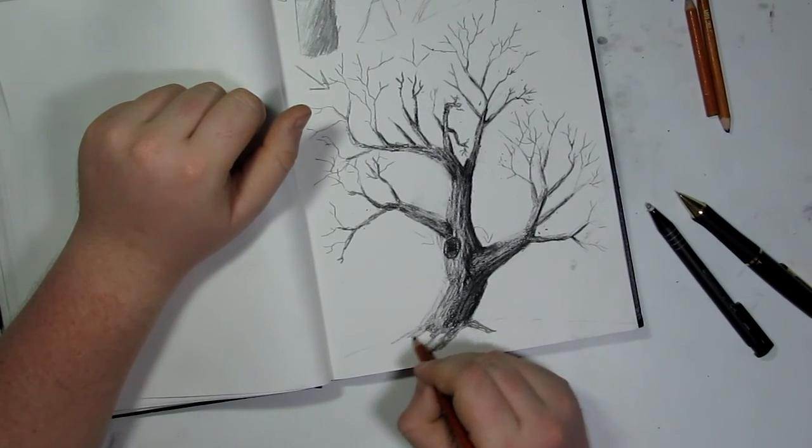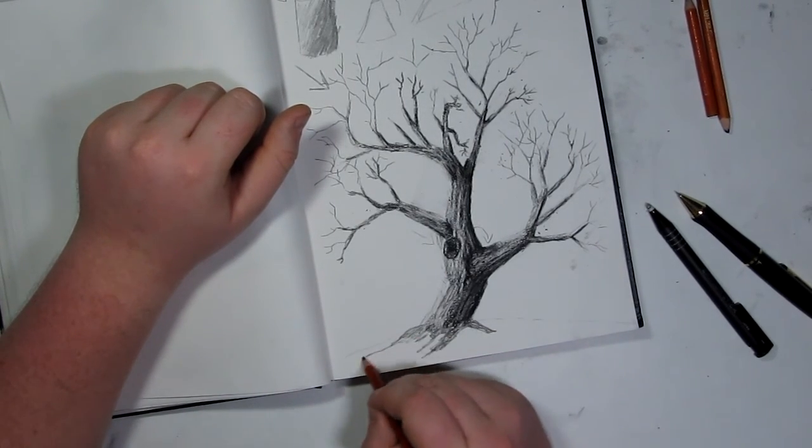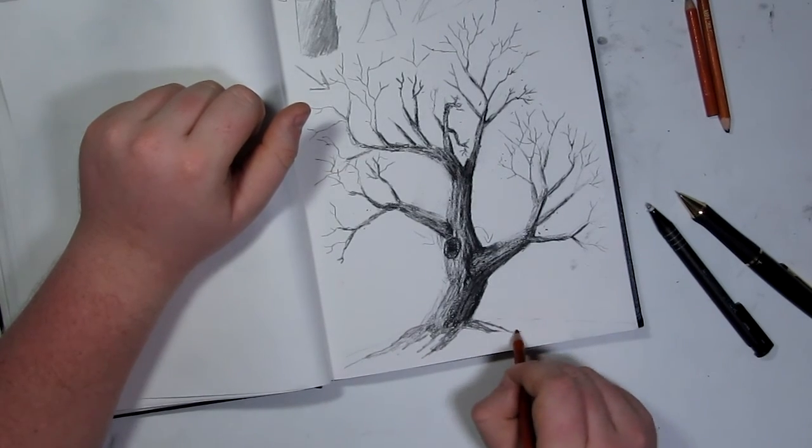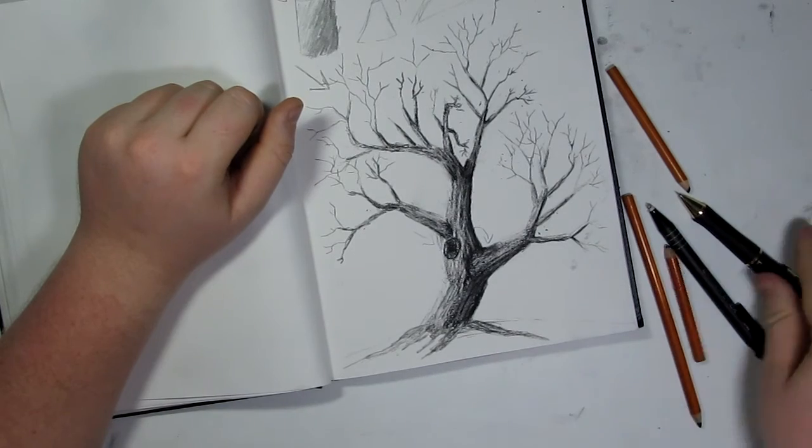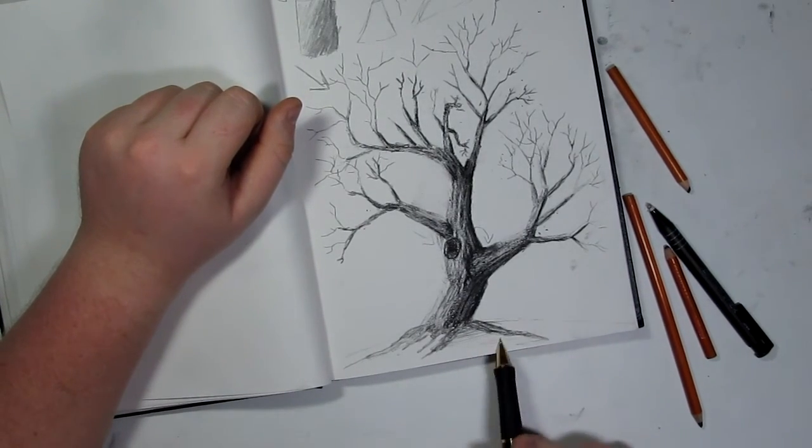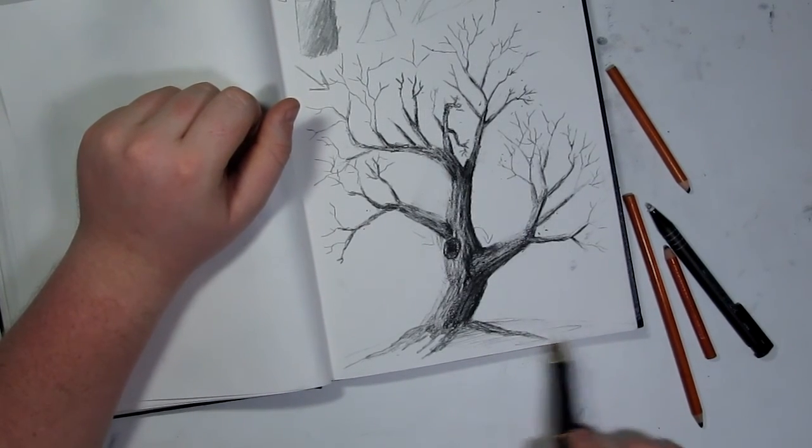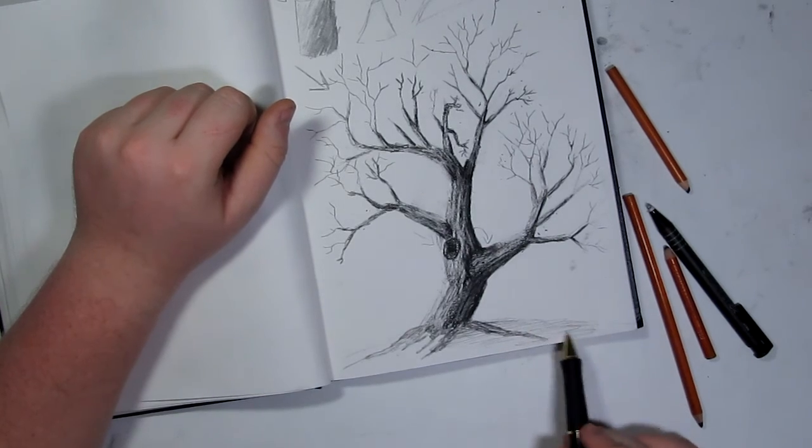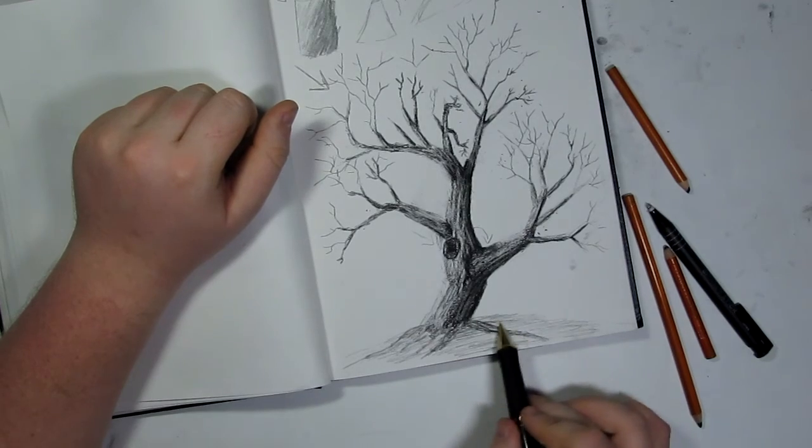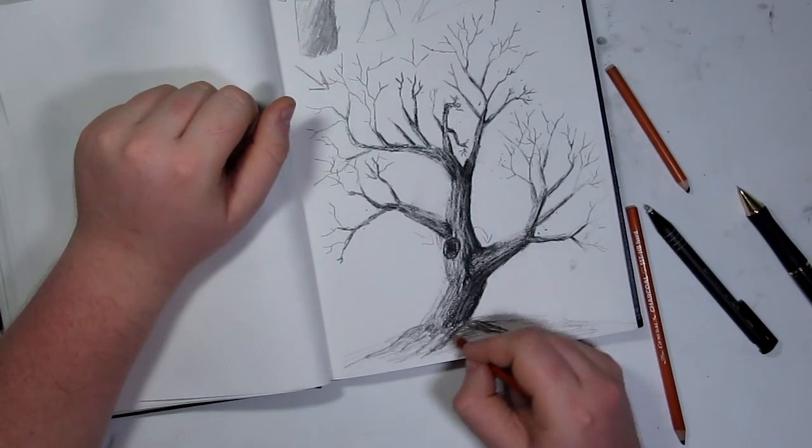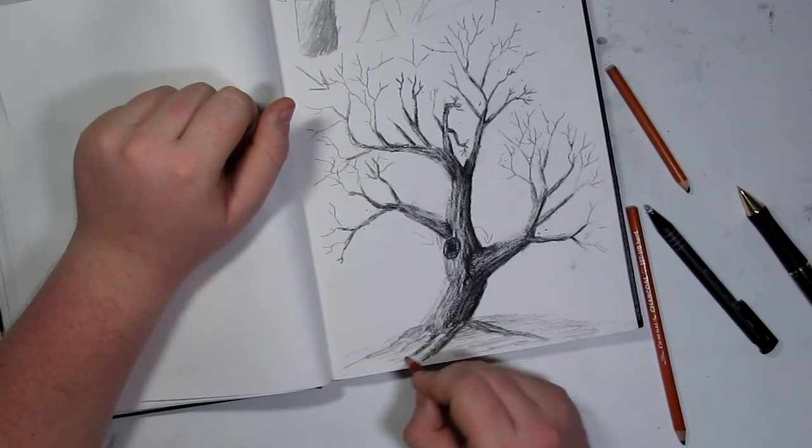This is the very last part of the drawing. I'm just putting in the root system, just to sort of plant the tree into the ground if you will. I'm putting in a simple root system on the surface of the land, and I'm also going to shade in the ground a little bit to add in a shadow and also to portray some grass and rocks and dirt and things like that. After this, this drawing will be complete.